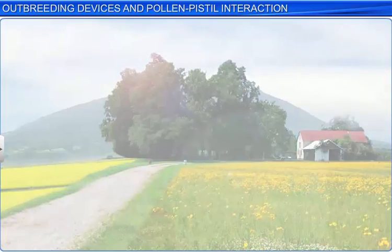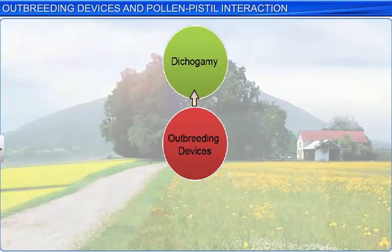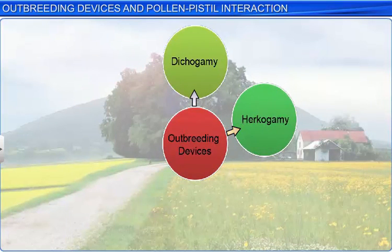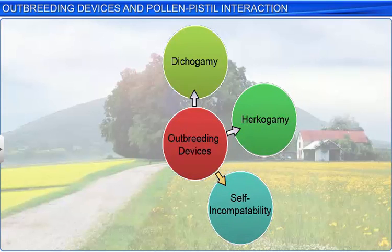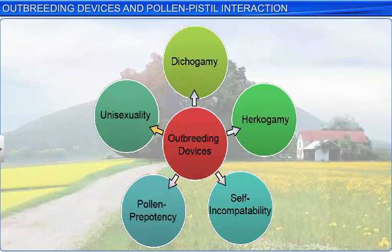These devices include dichogamy, herkogamy, self-incompatibility, pollen prepotency, and unisexuality.